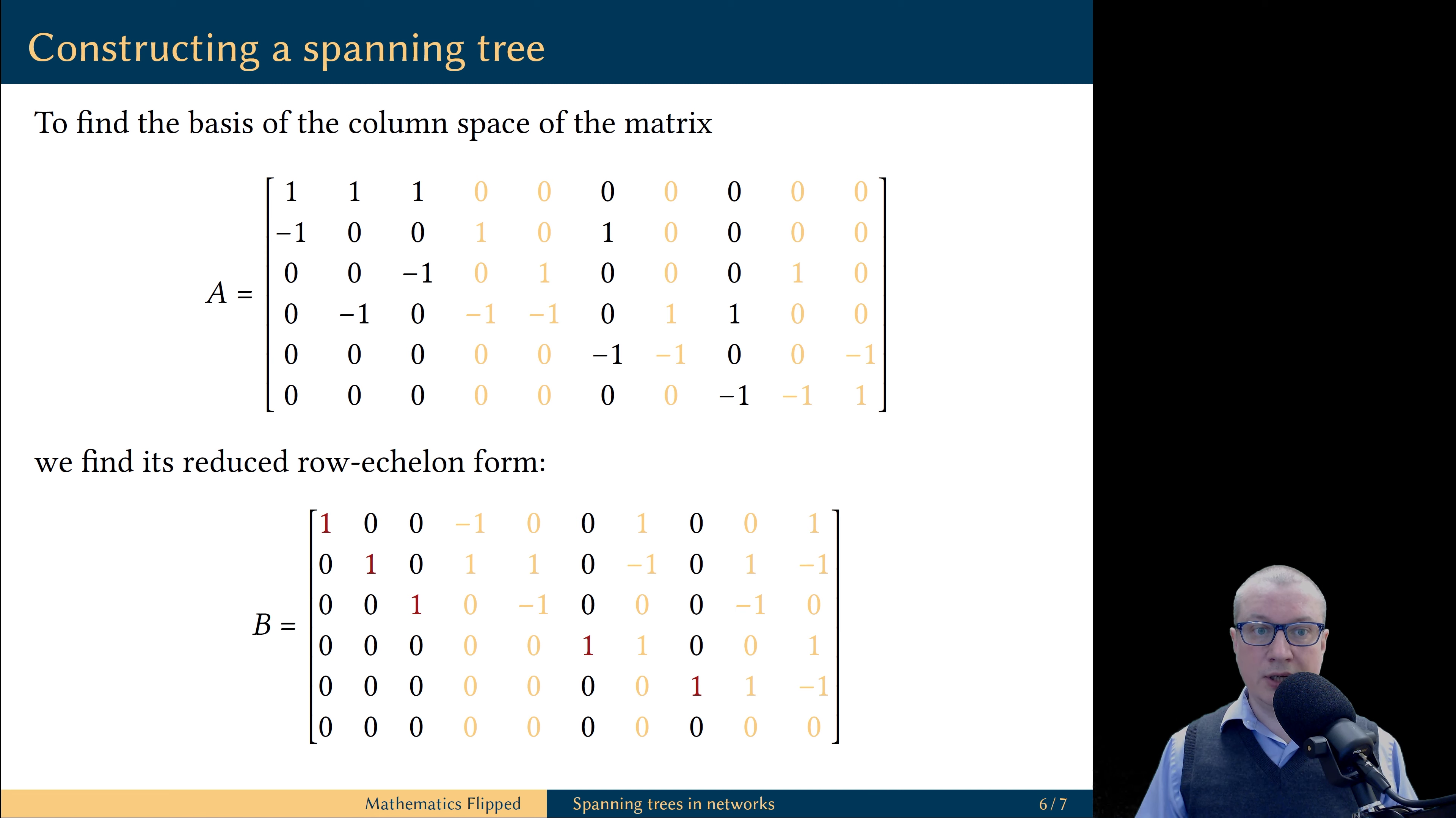So, what we would like to do is to remove the corresponding columns from the matrix A. The remaining columns of the matrix A, the ones that correspond to the pivot columns of the matrix B, do form a basis for the column space of the matrix A.